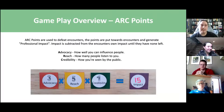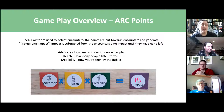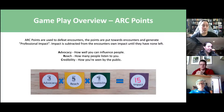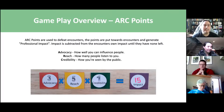The biggest thing to understand next is arc points. Arc points are used to defeat encounters — you multiply whatever is on the table to create professional impact. That impact is placed against the encounter's own impact score, shown in the upper right corner of their card. For example, a team might generate an impact of 15 which is subtracted from the encounter's impact. Advocacy is how you influence people, reach is how many people listen to you, and credibility is how you're seen in the public.